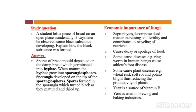Here we have a study question: A student left a piece of bread in an open place accidentally. Three days later, he observed some black substance developing. Explain how the black substance was formed. Answer: Spores of bread mold deposited on the damp bread germinated into hyphae. When mature, the hyphae grew into sporangiophores. Sporangia developed on top of the sporangiophores, and spores formed in the sporangia, which turned black as they matured and dried up.